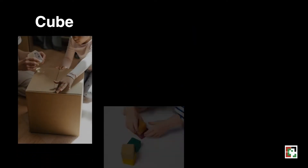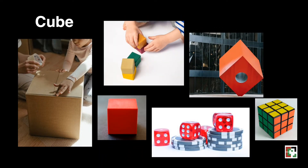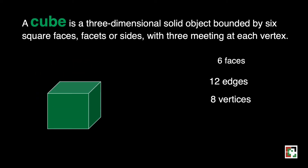Let us have the cube. These are some examples of a cube that we can see around us. A cube is a three-dimensional solid object bounded by six square faces, facets, or sides, with three meeting at each vertex.